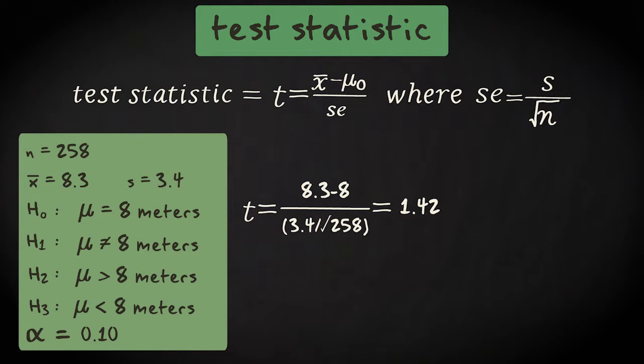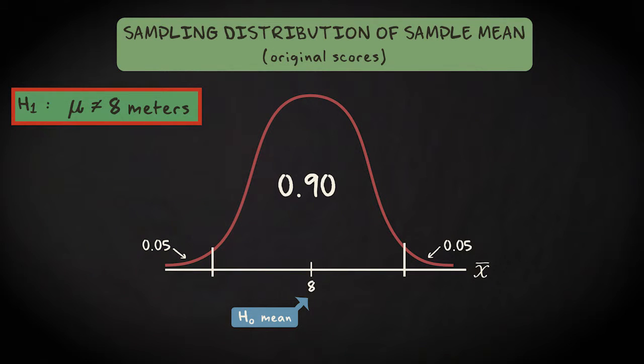Now, let's start with the first alternative hypothesis, this one. It claims that the population mean differs from 8. First, we draw the relevant sampling distribution and show the null hypothesis value. We have to do a two-tailed test based on an alpha of 0.10. The rejection region is about here.